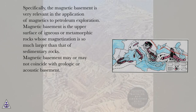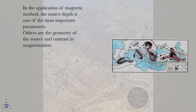Magnetic basement is the upper surface of igneous or metamorphic rocks whose magnetization is so much larger than that of sedimentary rocks. Magnetic basement may or may not coincide with geologic or acoustic basement. In the application of the magnetic method, the source depth is one of the most important parameters; others are the geometry of the source and contrast in magnetization.